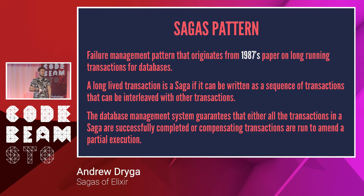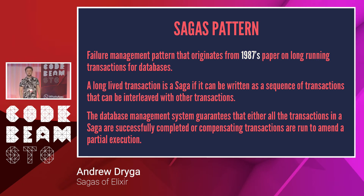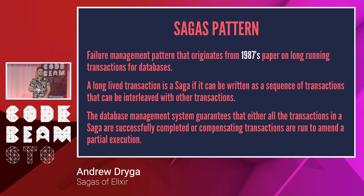And there is Sagas. Sagas is a failure management pattern originating from 1987. Its original use case was long-running transactions — a good example is an annual financial report: you run it once in a while, it takes a while, and you don't want to block your database while it's running. The Sagas goal is to get rid of the locks but still guarantee state is consistent after execution finishes. In Sagas, you trade off atomicity for availability.